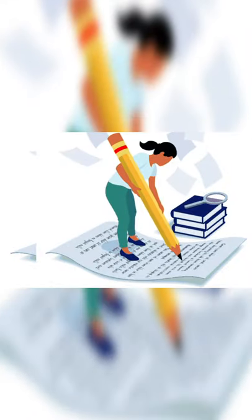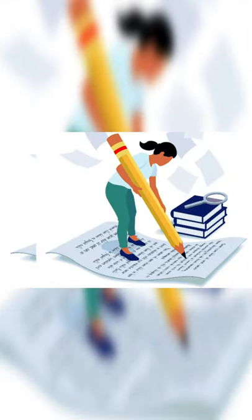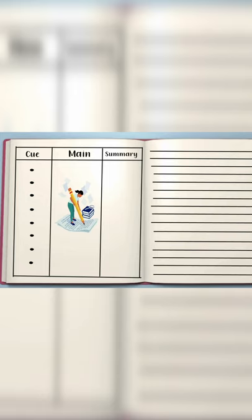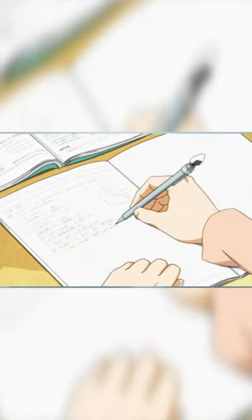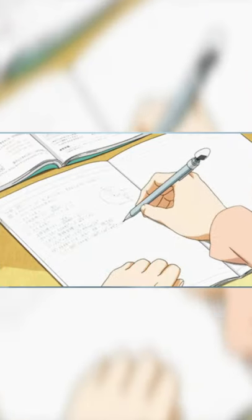One column will have the term called Q. Q is basically where you write all your key points to a chapter. The other column would be the main column in which you would write what you understood from that chapter in depth and the last column will be the summary column. In this, you will summarize your entire information in just 1 or 2 lines.